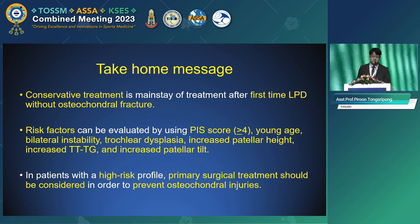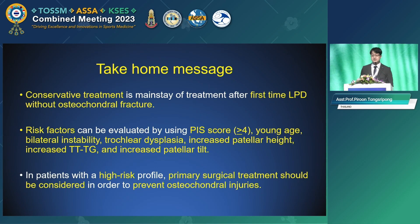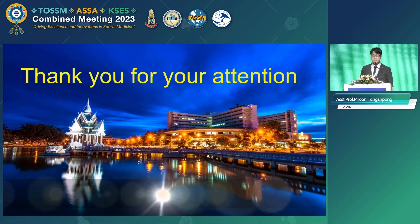Take-home message: Conservative treatment is the mainstay after first-time lateral patella dislocation without osteochondral fracture. Risk factors can be evaluated using the PIS score — a score above four, along with younger age, bilateral instability, trochlear dysplasia, increased patella height, increased TT-TG distance, and increased patella tilt, indicate high risk. In patients with a high-risk profile, primary surgical treatment should be considered to prevent osteochondral injury. Thank you for your attention.